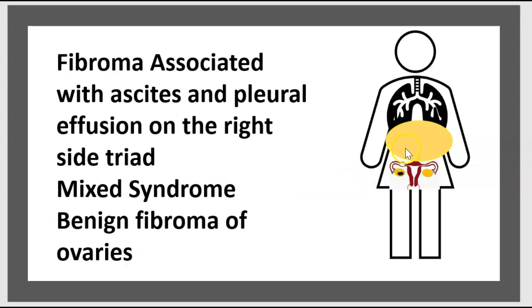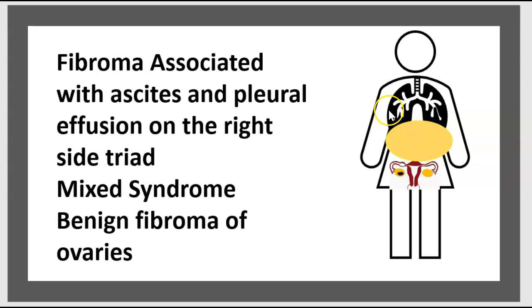Fibroma — think of the triad of Meigs syndrome: ascites, pleural effusion on the right side, and fibroma of the ovary.